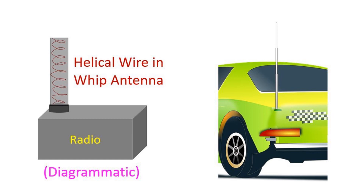Rubber ducky antennas are used on other types of walkie talkies as well. They have a helical coil inside and the outer covering is made of flexible material, which gives the antenna its name. The helical nature of the wire gives added inductance to cancel out the capacitive reactance of an electrically short antenna, which is typically shorter than the quarter wavelength of the operating frequency, sometimes even just one-tenth of the operating frequency.